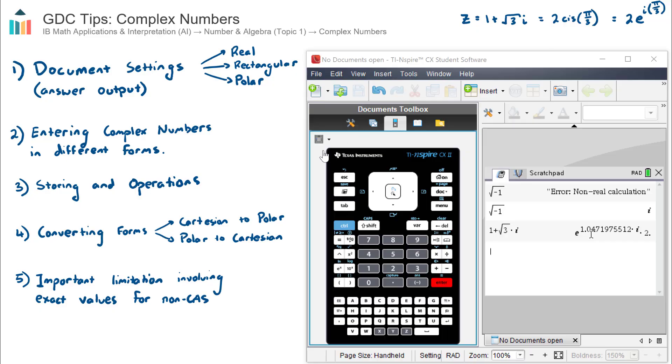Okay, the next item that I want to go through is how to enter the different types of complex numbers. Now I just demonstrated that for Cartesian form. I just needed to know where to find the i, and that was in, just to recap, that's in pi and then this i here. Let's now enter this zed complex number here at the top in both polar form and in Euler form.